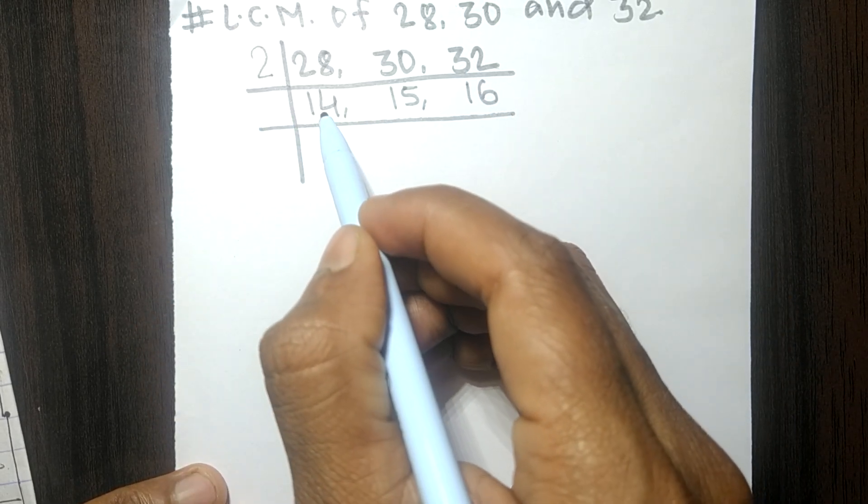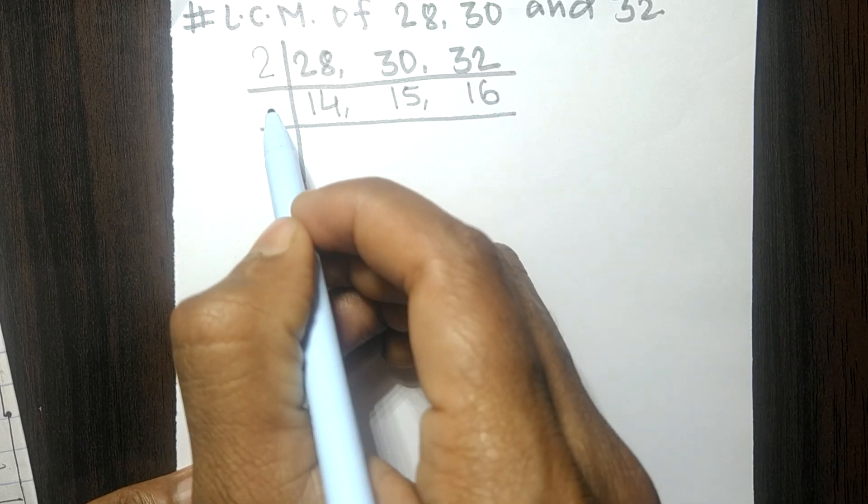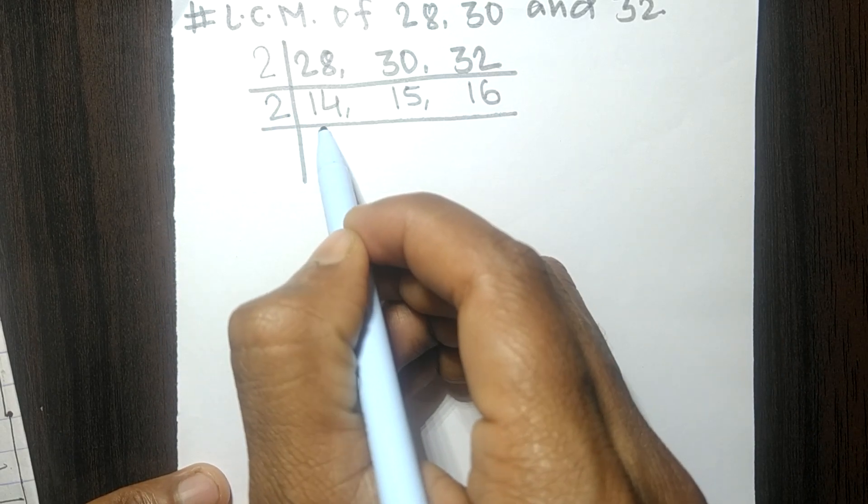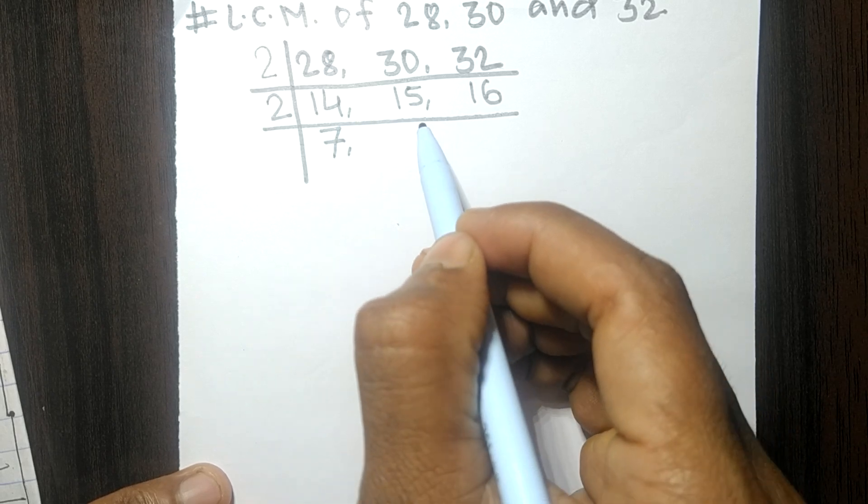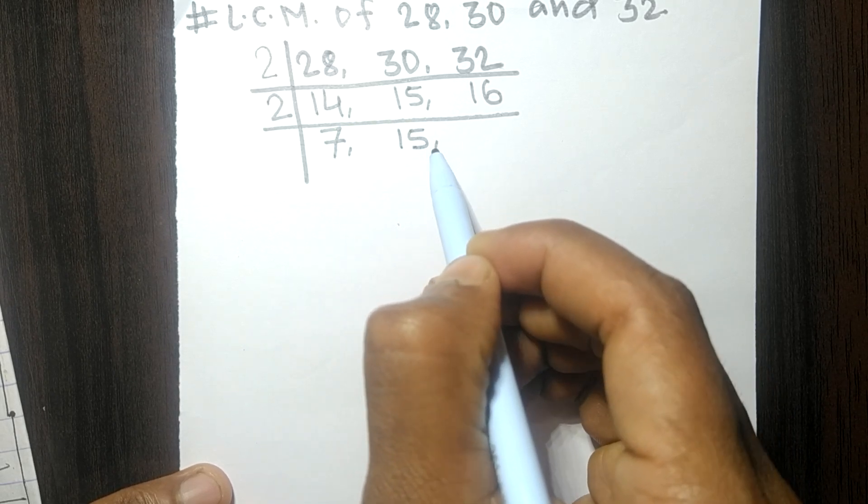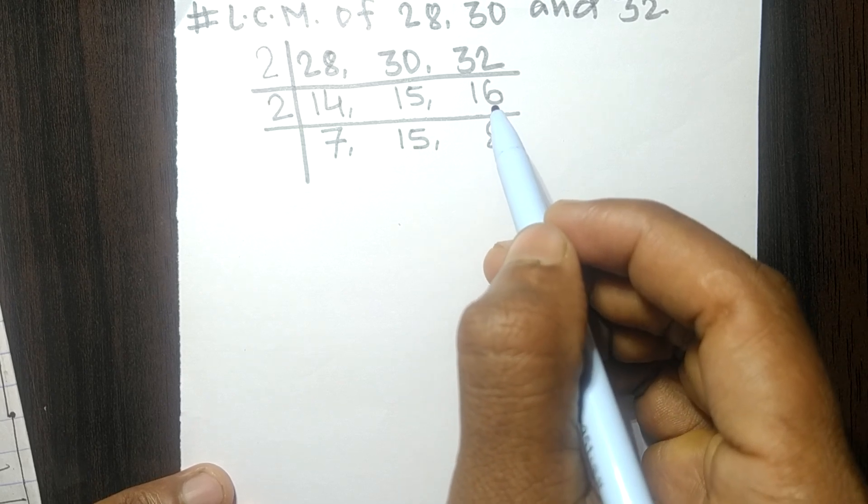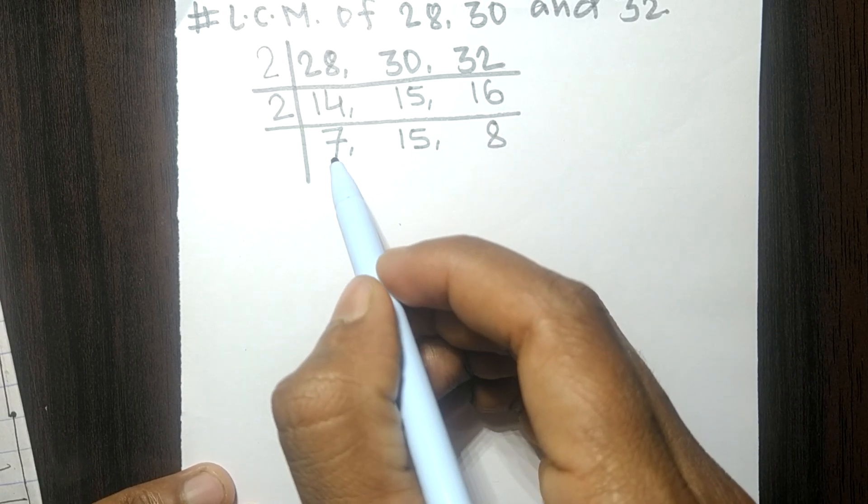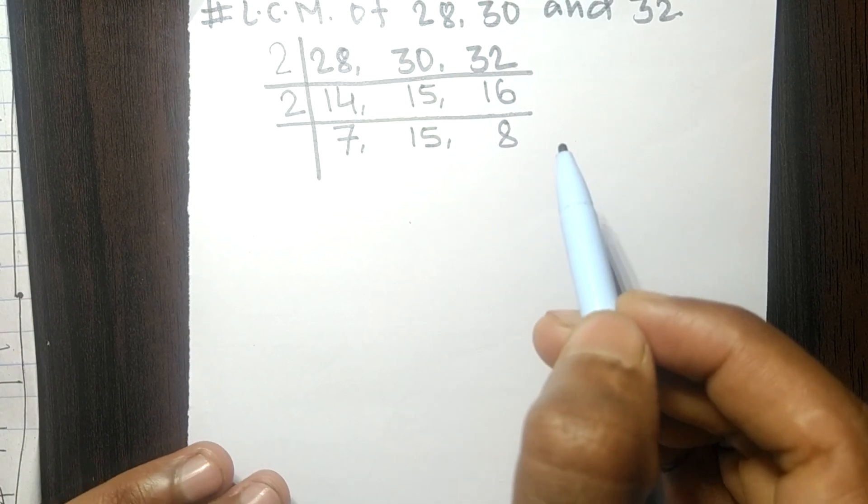Again, this 14 and 16 are exactly divisible by 2, so 2 times 7 mean 14, 15 not divisible so it is same, 2 times 8 mean 16. So now the numbers 7, 15 and 8 are not exactly divisible by same number.